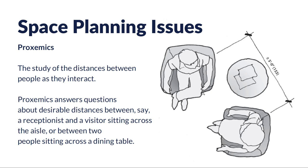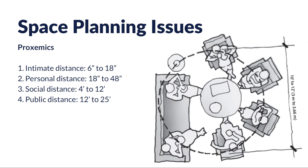Proxemics is the study of the distances between people as they interact in different ways. The study answers questions about desirable distances — for example, if you walk in and see a receptionist with visitors sitting across the aisle, what's a comfortable amount of space? What's too close or too far? A few examples of standard distances: intimate distance is approximately 6 to 18 inches; personal distance is about 18 to 48 inches; social distance — people out and about interacting — is 4 to 12 feet; and public distance would be 12 to 25 feet apart.